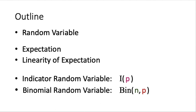And finally, we will talk about two very special random variables which appear in many, many scenarios. They are the indicator random variable — usually we will denote this by I(p), as it has a parameter p — and another random variable called the binomial random variable, usually denoted as Bin(n, p), as it has two parameters n and p.